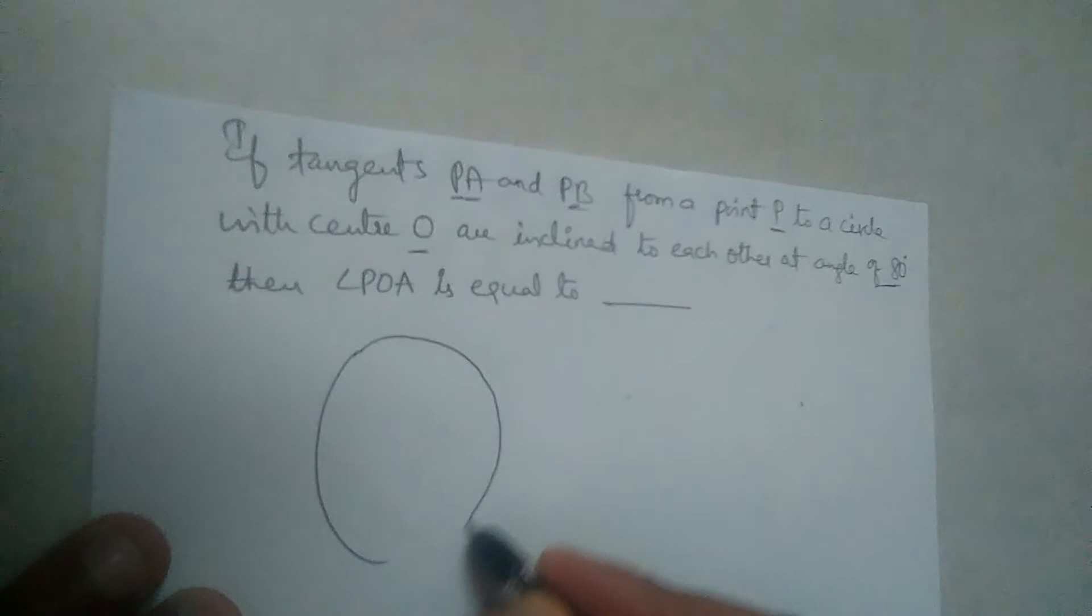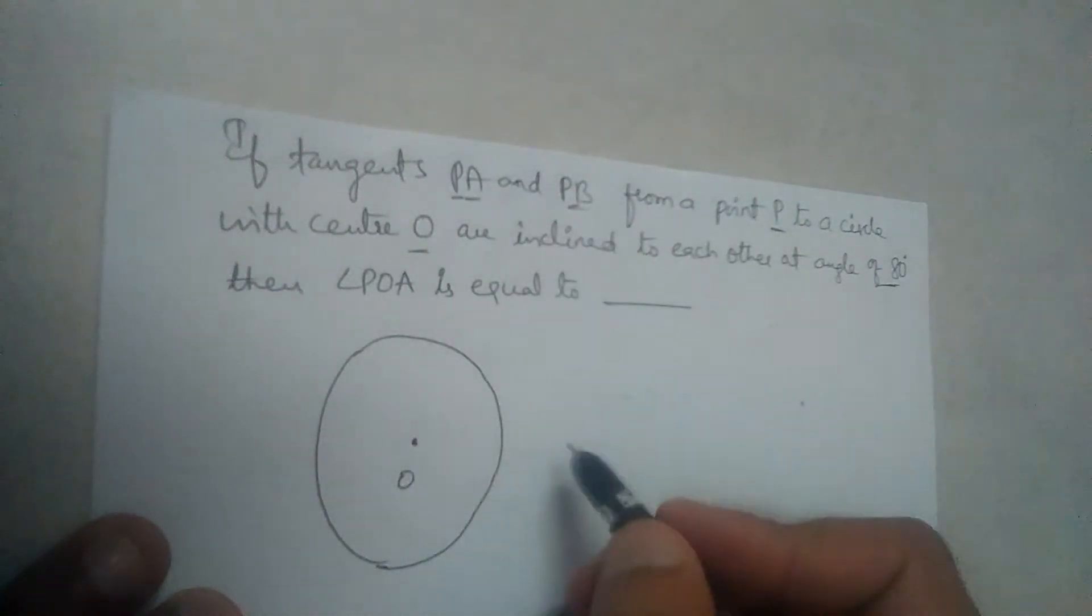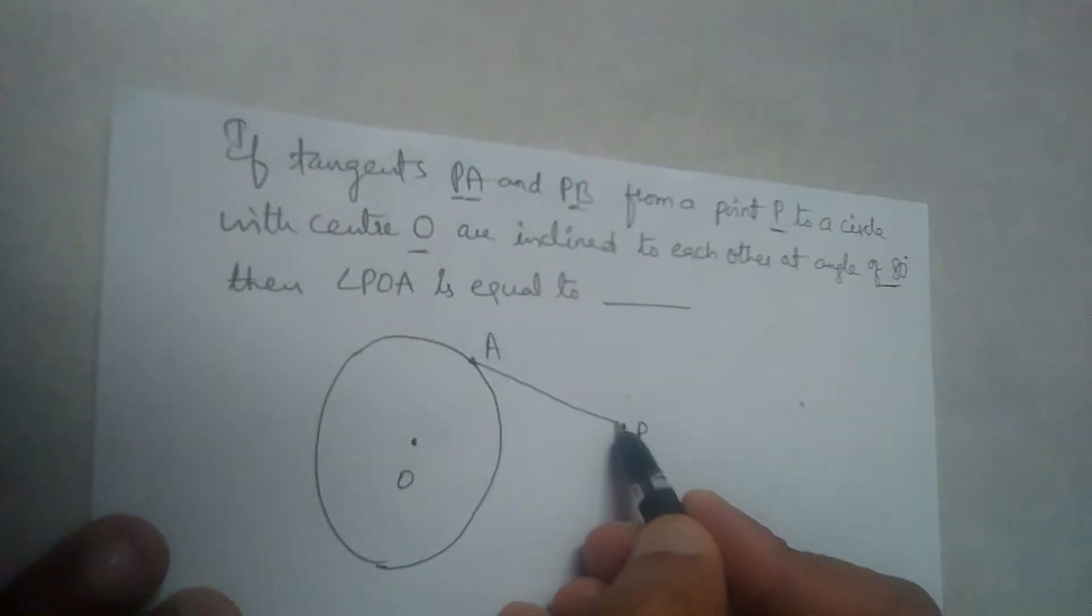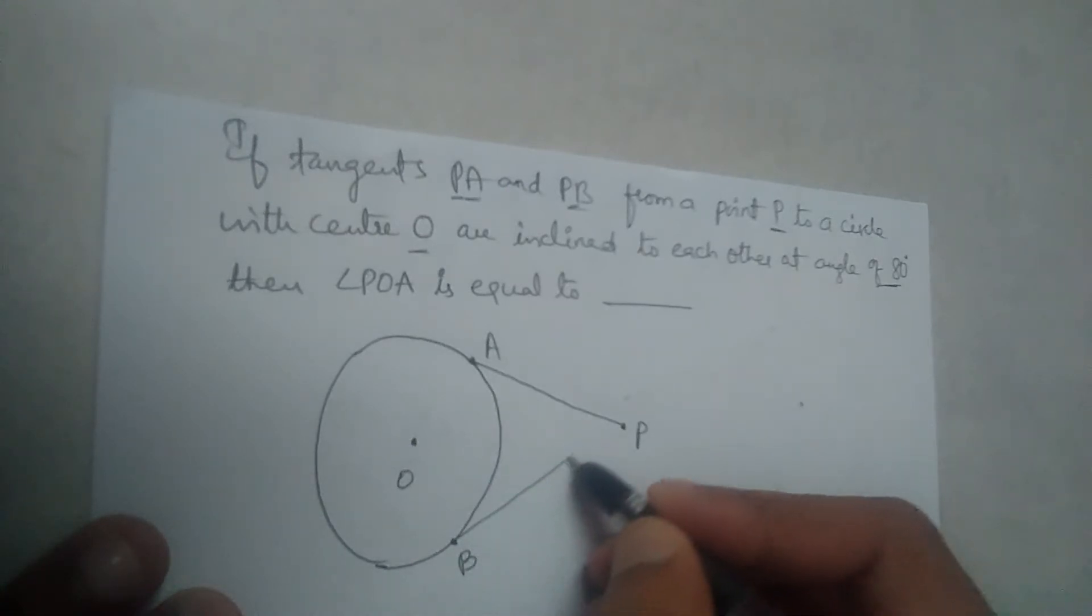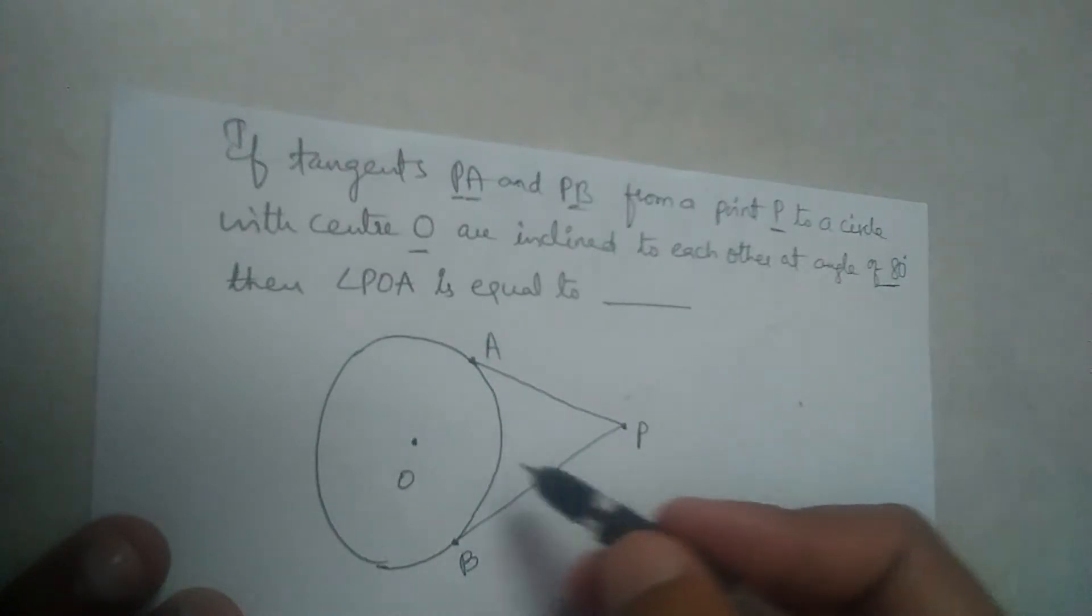Let us draw a circle. Center is O and PA and PB. So point P is outside the circle. Let A be point of contact. So PA and PB another point of contact. So PA and PB are tangents from a point P to a circle with center O.